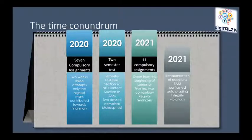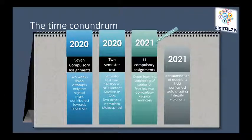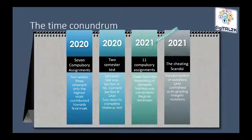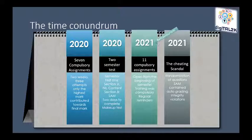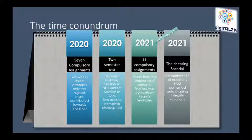In 2021, we allowed access to all course content at the beginning of the semester, including 11 compulsory assignments. Behaviorism was enforced — if students missed the assignment deadline, no extensions were given because the assessments were open for long periods. To avoid cheating during the semester test, the large number of questions allowed for randomization. For the practical section, projects with SAM contained an auto-grading feature that inspects for integrity violations, so no student could upload a file that belonged to someone else.